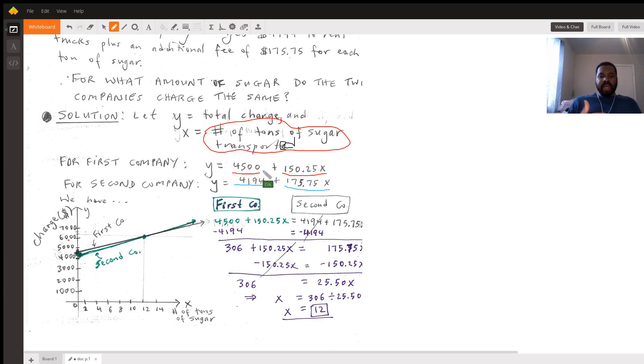We want to find out for how much sugar would the companies cost the same - how many tons of sugar. The easiest way to think about it is: if y is the cost in each case and we're thinking about when the y's are the same, then that amounts to taking these two equations and setting them equal to each other without using the y. In other words, this right side has to equal this right side.